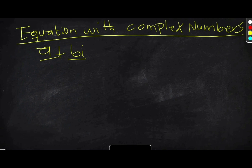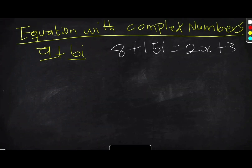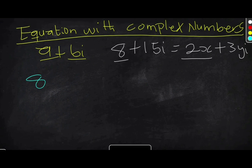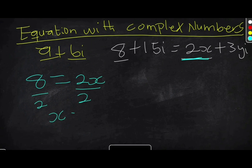Let's consider this example. Given that 8 plus 15i equals 2X plus 3Yi, find the values of X and Y. To find the values of X and Y, the first thing you have to do is compare the real parts on the left-hand side to the real parts on the right-hand side. We can see that at the left-hand side the real part is 8, and at the right-hand side the real part is 2X. Dividing both sides by 2, X equals 4.